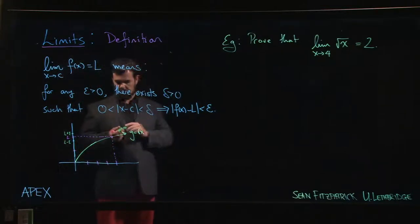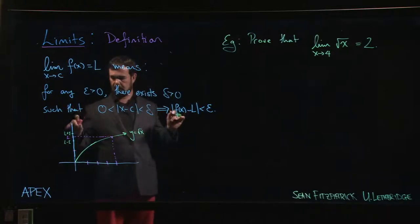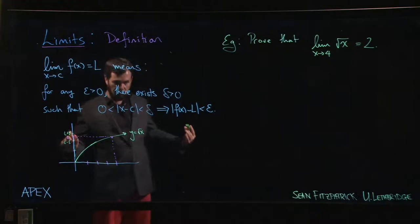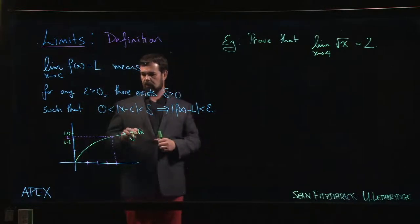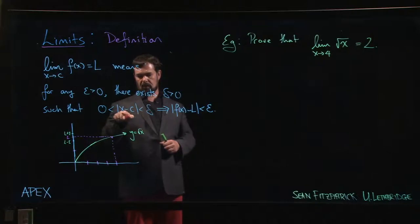The definition is saying that given any epsilon—and you want to think of this as meaning no matter how small—you can come up with this delta so that as long as you take x to be within a distance of delta from c...